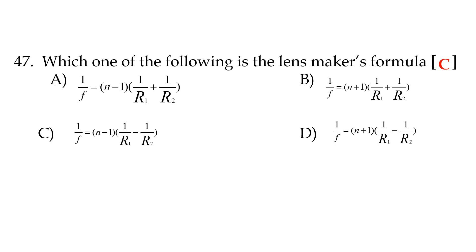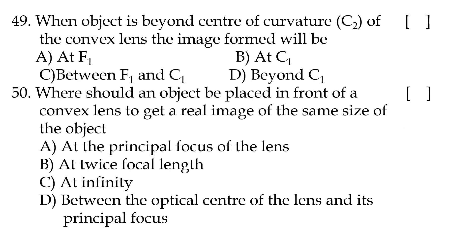Forty-seventh question: which one of the following is the lens maker's formula? Option C: 1/F = (N − 1)(1/R1 − 1/R2), where F is focal length, N is refractive index, R1 and R2 are radii of curvature of the lens surfaces.